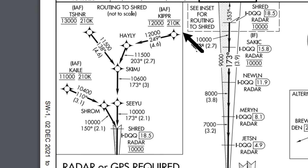To the right of that you'll see 210 with a K next to it, giving us our speed — that reads 210 knots. Again you'll see a line above and below that, meaning we cannot bust that speed restriction — no faster and no slower.